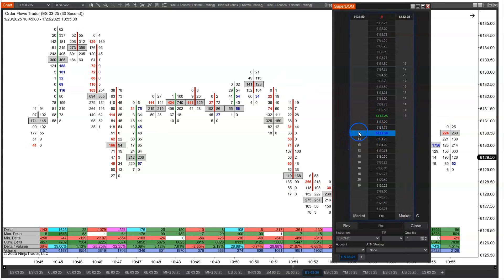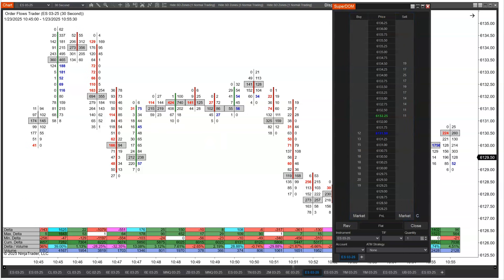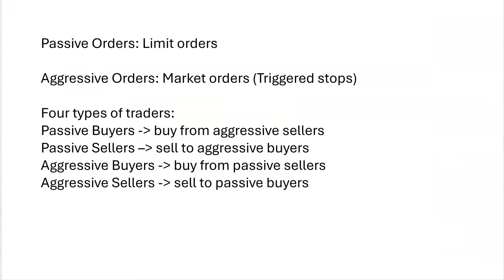So you have a bid and an offer. People that are sitting on the bid are trying to buy at a specific price — those are passive buyers. People that are sitting on the offer are passive sellers; they're trying to sell at a specific price. Passive orders are going to be limit orders, either bids or offers. It doesn't have to be the best bid or the best offer — it could be something sitting in the book, below the market or above the market. Aggressive orders are basically market orders, which can be triggered stops.